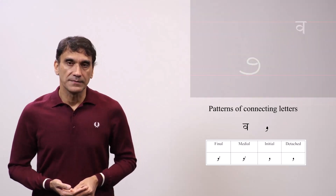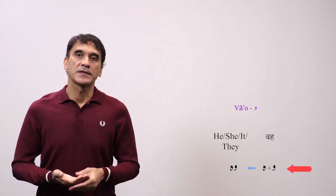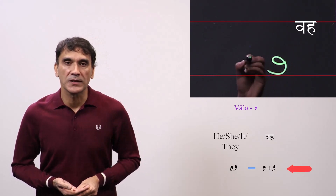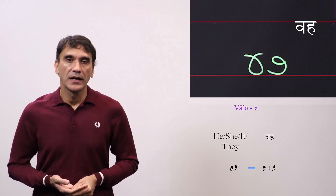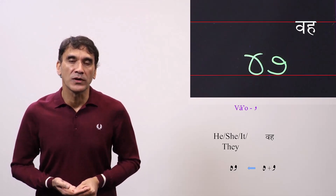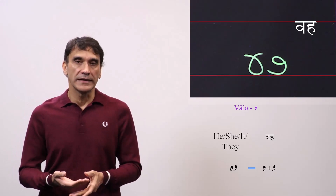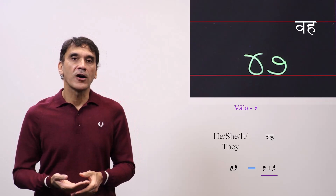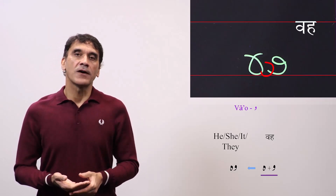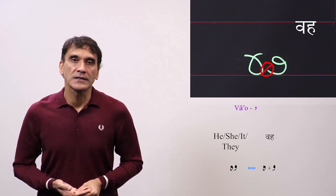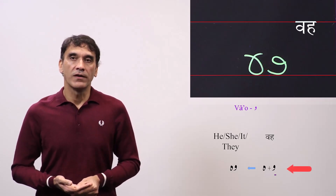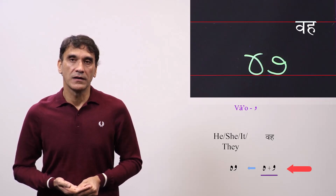The first word is 'vah,' the third person singular subject pronoun meaning he, she, and it. In Urdu, the same pronoun is also used for the third person plural subject pronoun, meaning they. The spelling is vav plus chhoti he — vah. Since vav is non-connected, the chhoti he will be written as a detached letter. So vav plus chhoti he — vah.